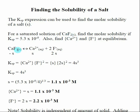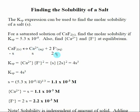Calcium fluoride dissociates to make Ca²⁺ plus 2F⁻. Just like our other equilibria, this stoichiometry means there is a two-to-one ratio of these species in solution. So the concentration of F⁻ is going to be twice as large as the concentration of Ca²⁺. If I assume that some amount S dissociates, then S amount of Ca²⁺ is going to be made and 2S of the fluoride.